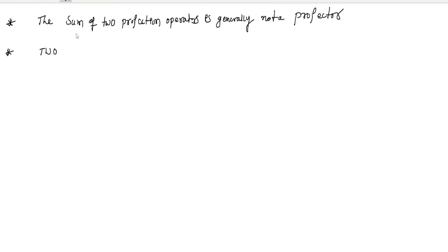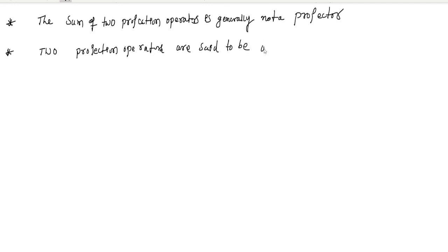Two projection operators are said to be orthogonal if their product is zero.